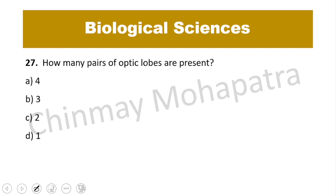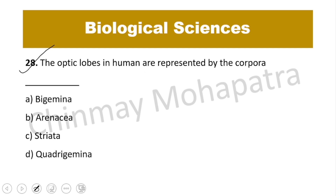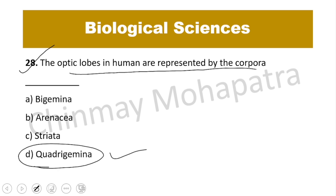Question number 27: How many pairs of optic lobes are present? The right answer is one pair, meaning two in number — two optic lobes. Question number 28: The optic lobes in humans are represented by the corpora quadrigemina, which controls vision and hearing.